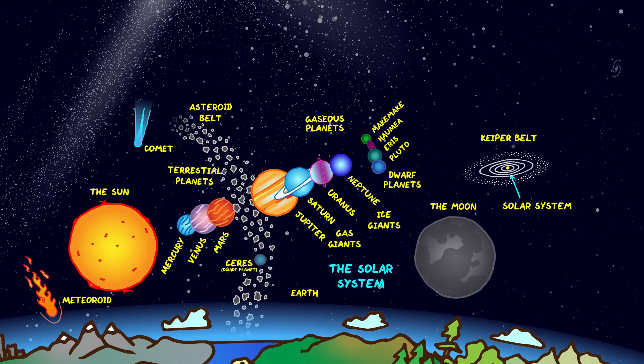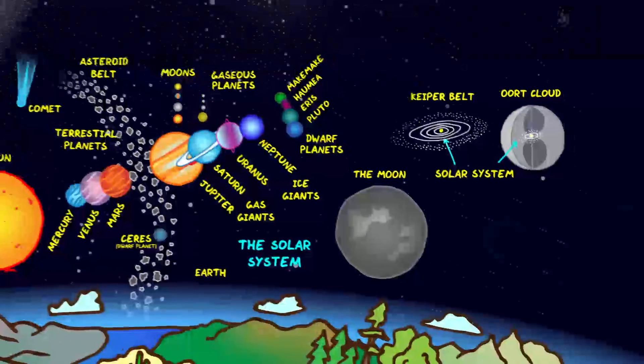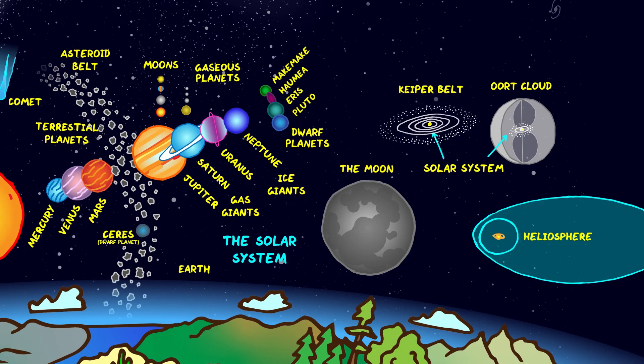And of course we have moons like our moon and the moons around other planets. Beyond the Kuiper belt we have the Oort cloud, a theoretical cloud of icy objects surrounding the Sun in all directions. And finally we have the heliosphere, a large bubble around the solar system created by particles coming from the Sun called the solar wind hitting particles from the rest of the galaxy, the interstellar medium.